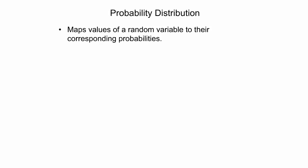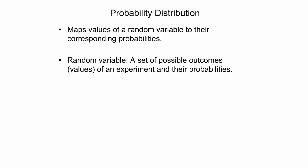A probability distribution maps values of a random variable to their corresponding probabilities, and is typically denoted as a table or an equation. A random variable is a set of values resulting from an experiment, such as tossing a coin twice, and their associated set of probabilities. A random variable can be discrete or continuous. We will first look at the characteristics of a discrete random variable and present examples of discrete probability distributions.